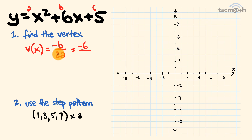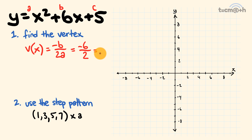To find the x-coordinate of the vertex, we go negative b over 2a. Let's substitute in those values. b is equal to 6, so negative b is equal to negative 6. This is all over 2 times a. a is equal to 1, so 2 times 1 is equal to 2. Negative 6 divided by 2 is equal to negative 3. So we have the x-coordinate of the vertex, which is negative 3.